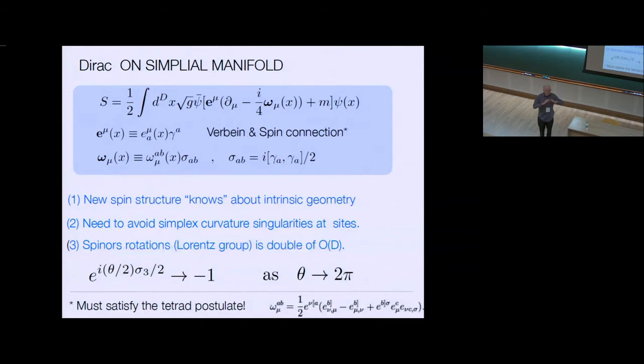The curvature, since all of the triangles are flat, or simplices are flat, the curvature is at the corners or in a higher dimension at the edges. But that means that the sites that you might want to put your fermion on in a natural lattice don't have a tangent plane.